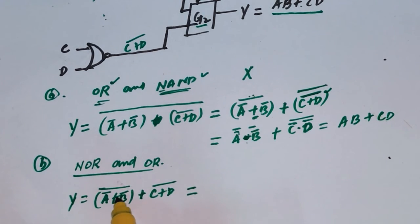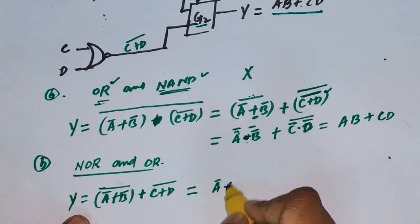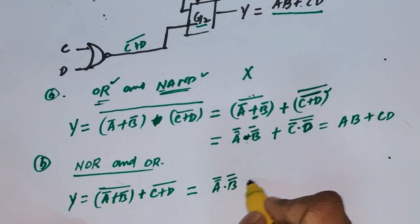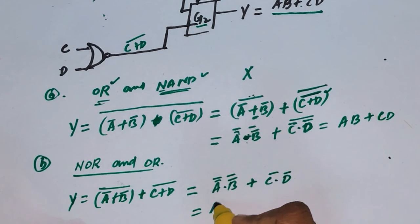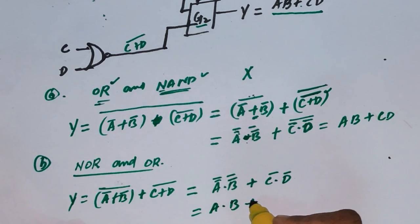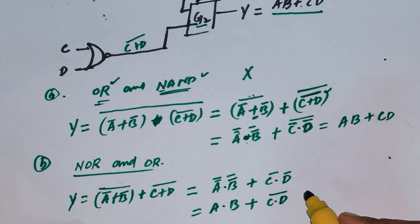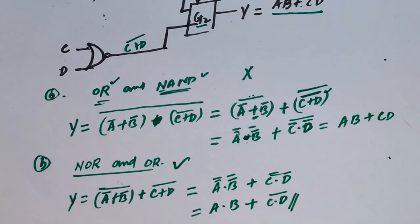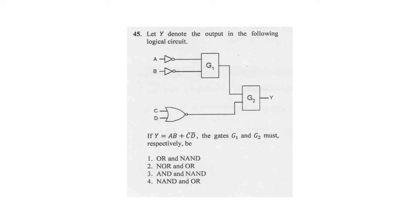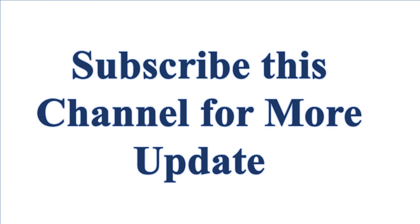The G2 NOR output equals: (A-bar plus B-bar whole bar) plus (C plus D whole bar), all complemented. Using De Morgan's theorem, the sum of complements equals the product of individual complements. The complement of (A-bar plus B-bar) whole bar equals A times B, since double complement cancels out, giving AB. Similarly, the complement of (C plus D whole bar) gives C-bar D-bar. So the final output Y equals AB plus C-bar D-bar, which matches the required answer exactly. Therefore option B is the right answer: G1 is NOR gate and G2 is NOR gate.